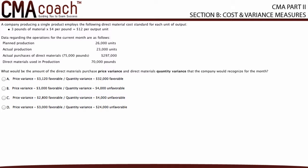Data regarding the operations for the current month are as follows: planned production 26,000 units, actual production 23,000 units, actual purchases of direct materials 75,000 pounds equals $297,000, and direct materials used in production equals 70,000 pounds. The question is: what would be the amount of the direct materials purchase price variance and direct materials quantity variance that the company would recognize for the month?